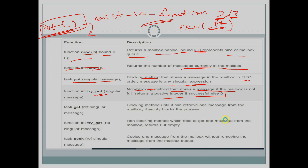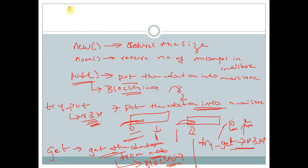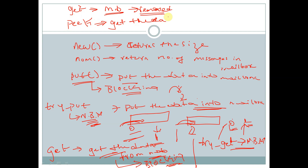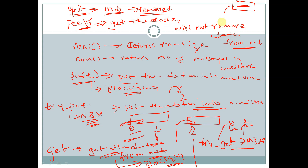'Peek' copies one message from the mailbox without removing it from the mailbox queue. By using the 'get' method, we get the data from the mailbox and the data is removed from the mailbox. Whereas with the 'peek' method, we get the data but it will not remove the data from the mailbox — it will just copy the data.